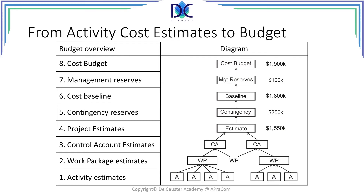Your project estimate was one million five hundred and fifty thousand dollars. The contingency budget is two hundred and fifty thousand dollars, so now you have a total baseline budget of one million eight hundred thousand dollars. Management adds some reserves of one hundred thousand dollars, which gives a total budget for your project of one million nine hundred thousand dollars. That's the overview from activity to the total budget for your project.